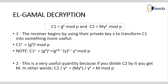For decryption, the receiver uses their private key X to process the ciphertext values C1 and C2. We compute C1 to the power of X, which equals G to the power of K times X mod P. This simplifies so that C1 to the power of X equals Y to the power of K mod P. This is a useful quantity.